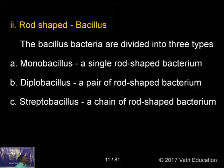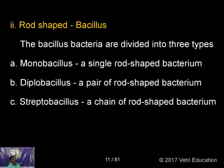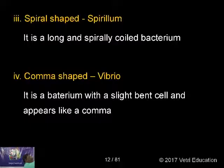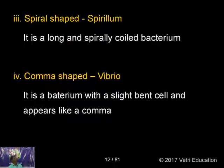Regarding rod-shaped bacteria, the bacillus type is divided into three types similarly: monobacillus is a single rod-shaped bacterium; diplobacillus is a pair of rod-shaped bacteria; streptobacillus is a chain of rod-shaped bacteria. Regarding spiral-shaped bacteria, spirillum is a long spirally coiled bacterium. A vibrio is a bacterium with a slight bent cell appearing like a comma — those are called vibrio bacteria.